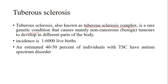Tuberous sclerosis is a rare genetic condition that causes mainly non-cancerous or benign tumors to develop in different parts of the body — in the skin, brain, and other areas. The incidence of tuberous sclerosis is 1 in 6,000. An estimated 40 to 50 percent of individuals with TSC have autism spectrum disorder.